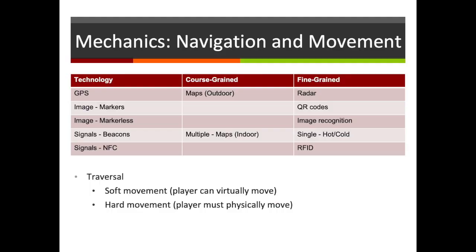As you might expect for games set in a physical environment, navigation and movement is probably the most important mechanic to think about in mixed reality games. We can think about this in terms of two different types. We have hard movement — that's where the player must physically move in the environment to trigger effects or mechanical actions. But they can also have soft movement — that's when the player moves within the virtual realm on their device, perhaps sending out a familiar or pretending to be in an alternative place.